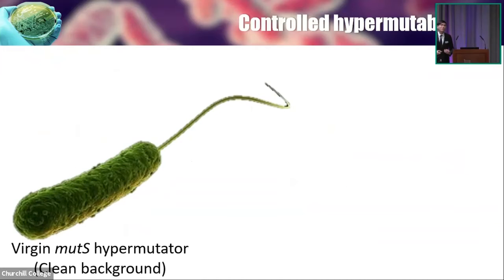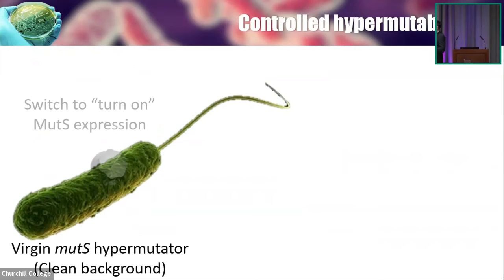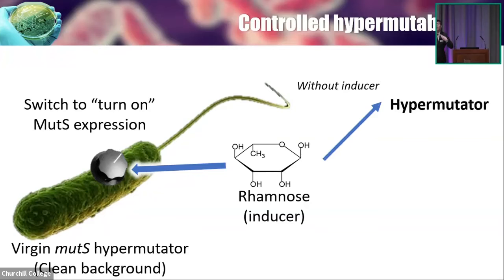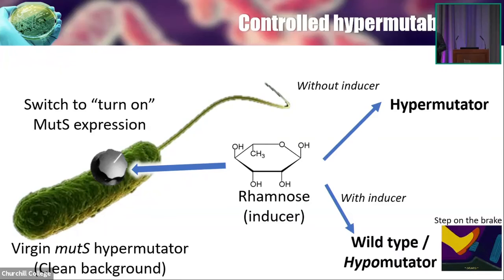So in this project, we are trying to exploit MutS so that we can control the rate of mutation of this bacteria by introducing a switch so that I can control MutS expression rheostatically, which will then control the rate of mutation itself. When there is a chemical inducer like rhamnose — if there is no rhamnose, then it will keep hypermutating because no MutS is doing the proofreading. But if there is rhamnose present, then it can stop and behave like a wild type, or if possible, behave like a hypomutator, which has never been reported before.